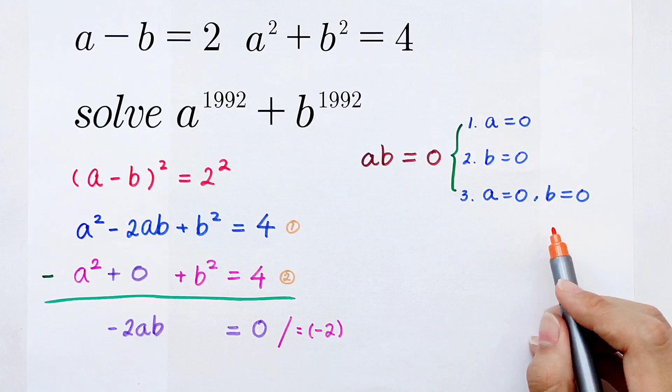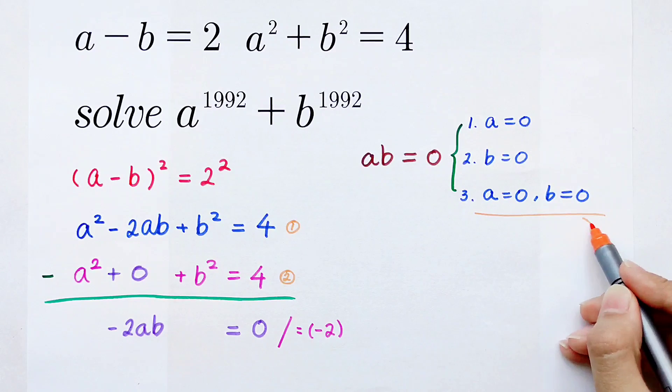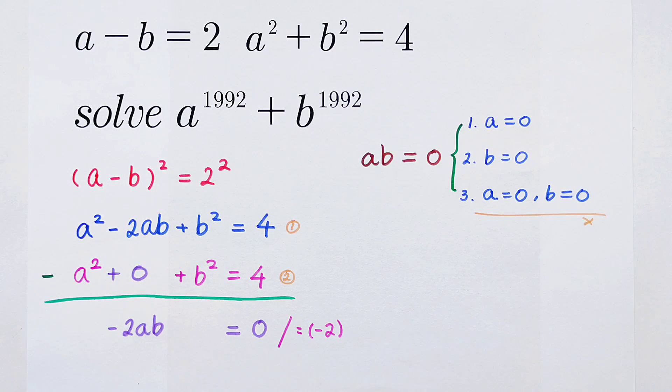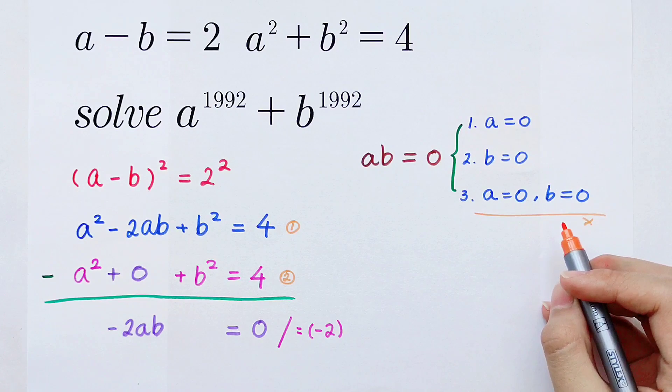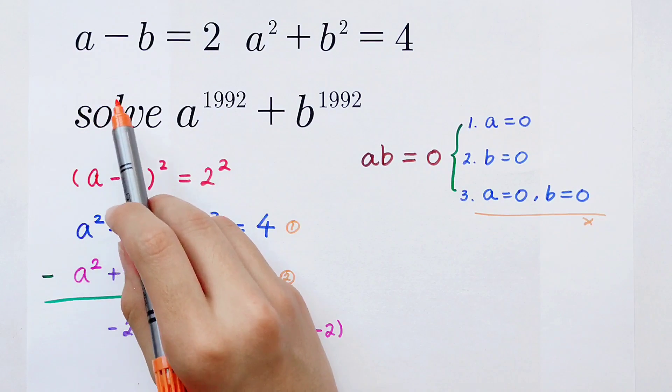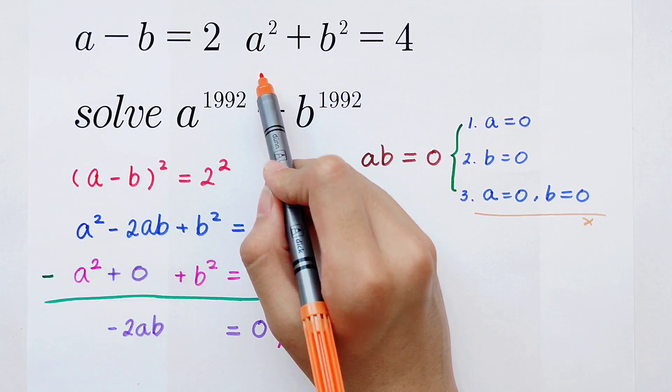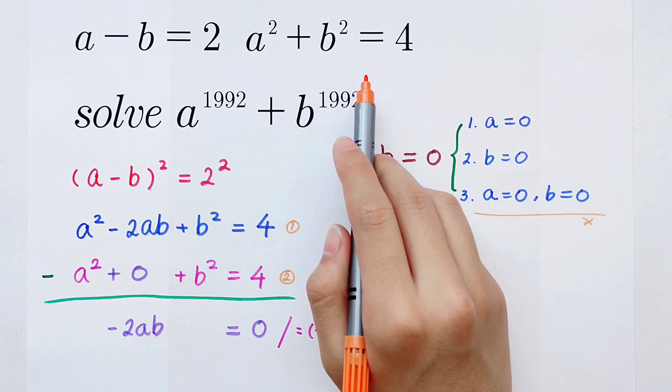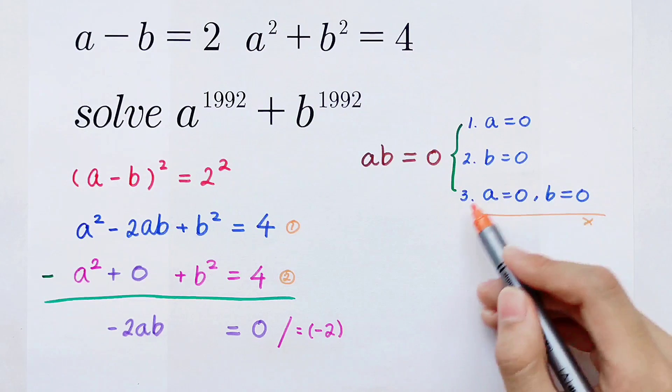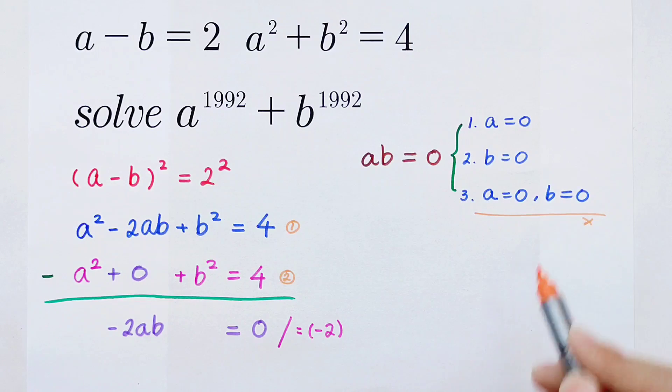Can a and b both equal to 0? No, they cannot. Because if a is 0 and b is also 0, then a minus b is 0, it's not 2. And a² plus b² is 4, but in this case it is 0. So from this, there are 2 cases.